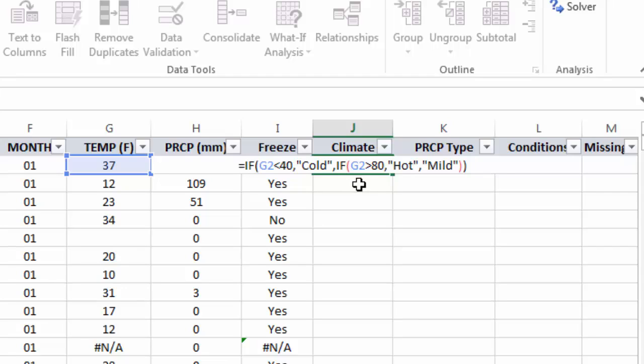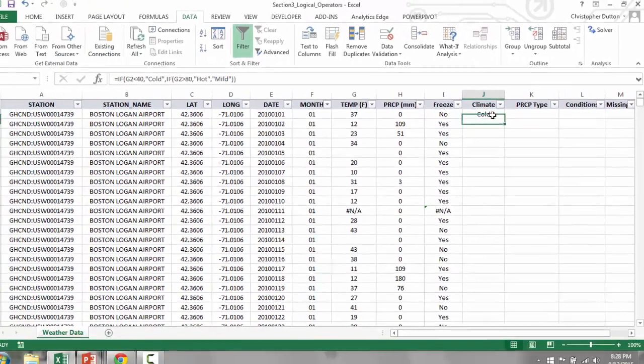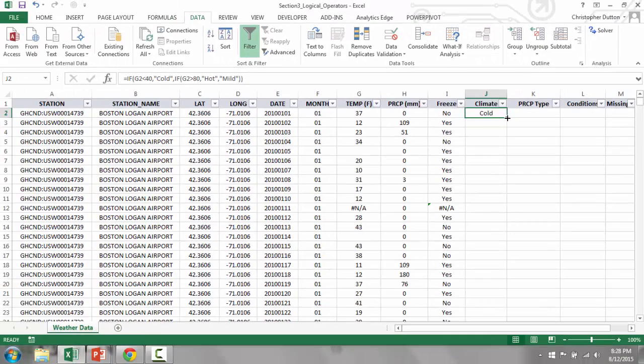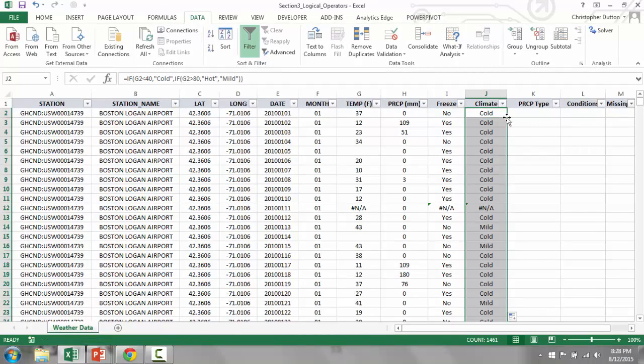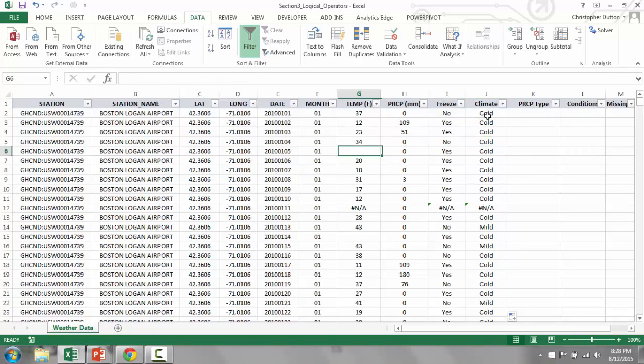So again, I'm going to leave the references relative, so that when I populate this formula down, my references will change from row to row. So let's see if this worked. I've got a bunch of cold values. Temp is below 40 in all of those instances.